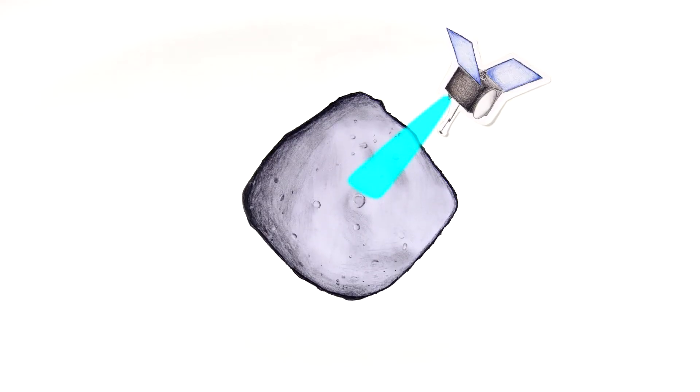The OSIRIS-REx mission spacecraft will carefully measure the small deviations in Bennu's orbit caused by the Yarkovsky effect, in an attempt to better predict the odds of an Earth impact in the future.